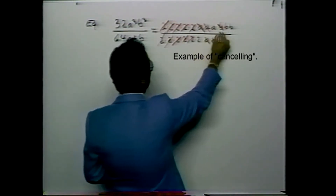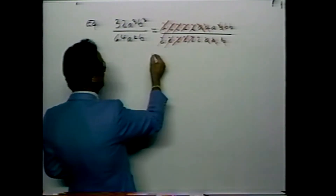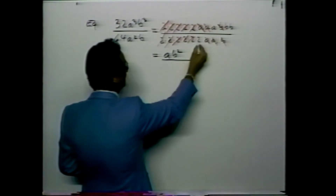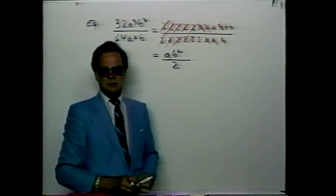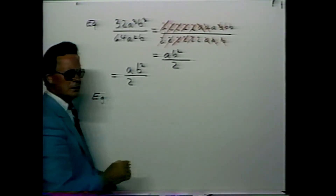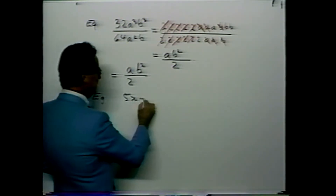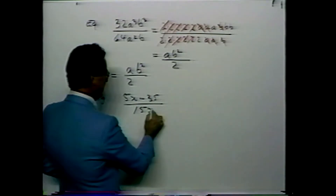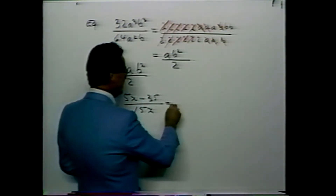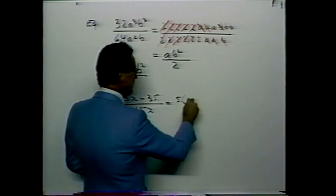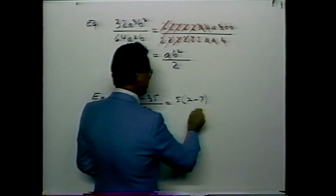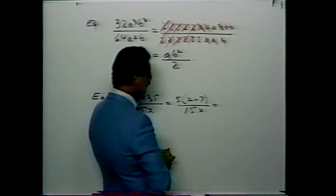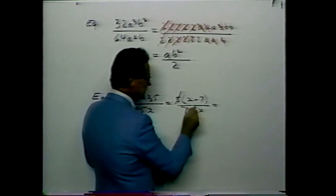Next: 32a cubed b cubed over 64a squared. We can see that 32 is a factor of 2 multiplied together 5 times, followed by a, a, a, and b, b, b. The denominator has 6 twos, followed by 2 a's. Reducing the fraction to its simplest form, we are left with a and two b's, which when multiplied give ab squared divided by 2.